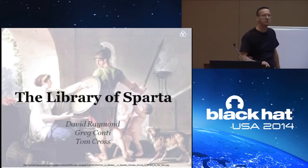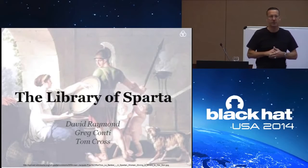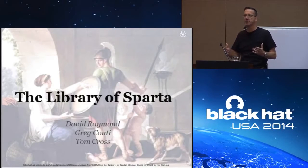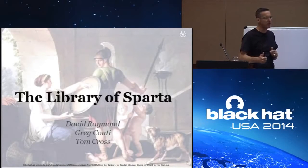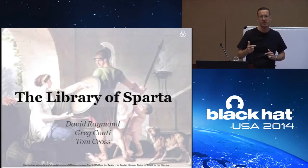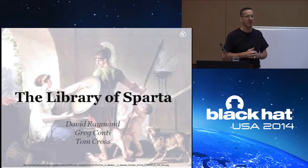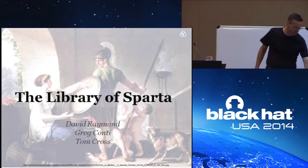Good morning. Thanks for being here. It's really our honor to be speaking at Black Hat this year. So the Library of Sparta — this is a term that we use to describe military doctrine and strategy. It's been refined over hundreds of years and is reflected now in writings by military theorists, in doctrinal manuals, and in professional publications and various online resources. What we hope to do today is give you an introduction into this really vast archive of military thinking that's been developed over years and then provide some examples of how you might use it in the defense of your network.